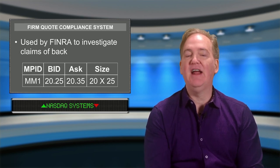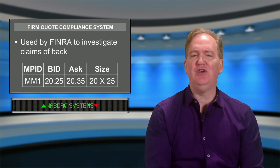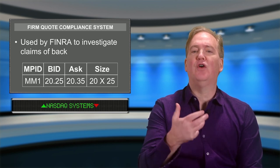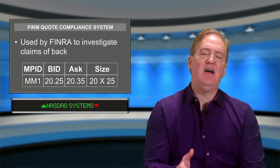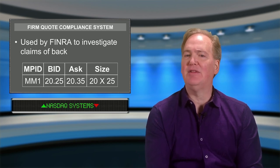FINRA will use the firm quote compliance system to review all the data, and if they find that the broker-dealer failed to honor the quote, the complaining firm will be entitled to receive a contemporaneous execution — a transaction at the price they would have received when the order was presented to the market maker. The market maker's firm quote obligation begins when an order is presented to it for execution. If no order is presented and they simply update their quote, a firm quote violation will not have taken place.